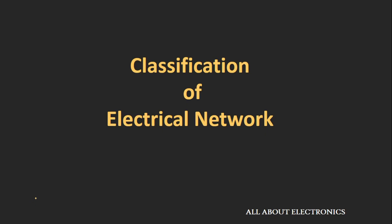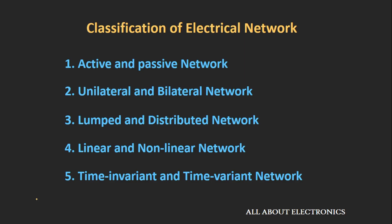Hey friends, welcome to the YouTube channel all about electronics. Today we will see the classification of an electrical network. The electrical network broadly can be classified in five different categories, and this classification depends on two things: the properties of the circuit elements connected in the network, and the response of the network for different excitations.